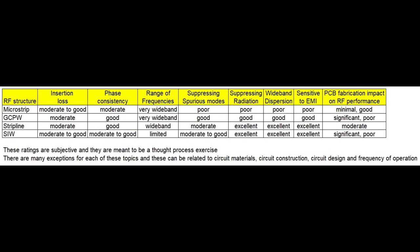Shown in this graphic is a subjective table giving RF designers a thought process on different RF structures and how they perform. For example, looking at MicroStrip in the first row, in the seventh column — Wideband Dispersion — MicroStrip is rated poor because it is dispersive. Grounded Coplanar Waveguide is rated good, possibly even excellent depending on design. Stripline and SIW are both rated excellent, though these ratings are subjective and intended as a general thought process.